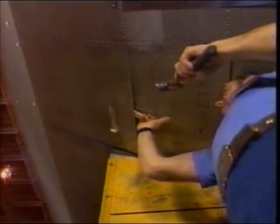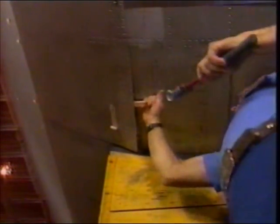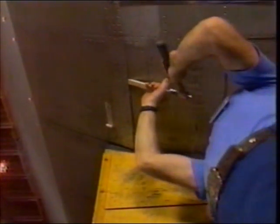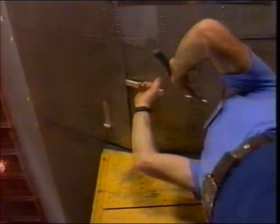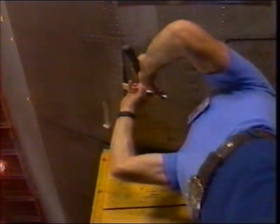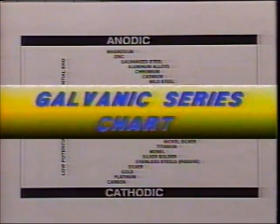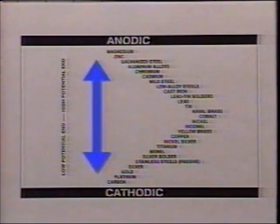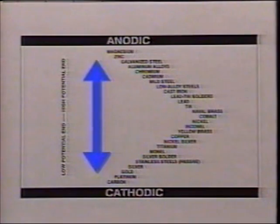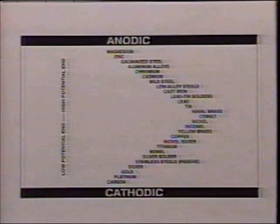On the job, you need to know how different metals react with each other so you can spot potential trouble aboard your aircraft. The Galvanic Series chart shows how different metals compare with each other and how likely they are to corrode. The further apart two metals are on this chart, the faster one or the other will corrode if they are joined together.